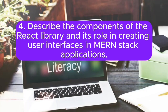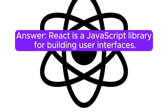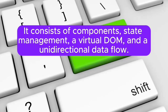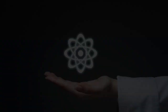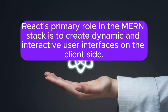4. Describe the components of the React library and its role in creating user interfaces in MERN stack applications. Answer: React is a JavaScript library for building user interfaces. It consists of components, state management, a virtual DOM, and a unidirectional data flow. React's primary role in the MERN stack is to create dynamic and interactive user interfaces on the client side.